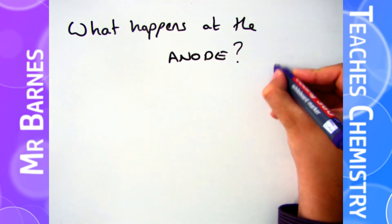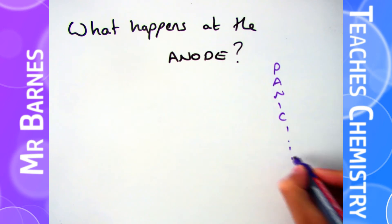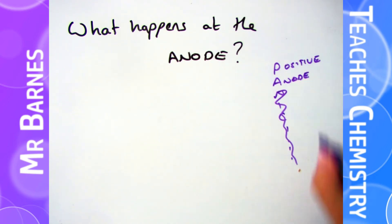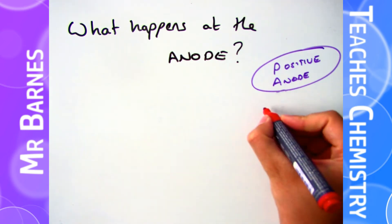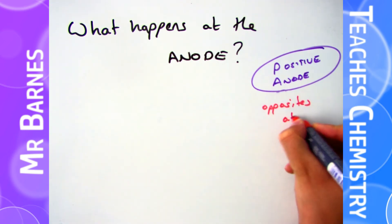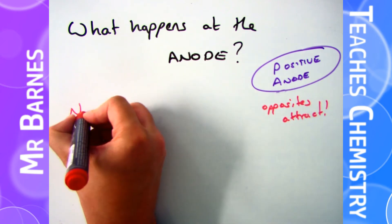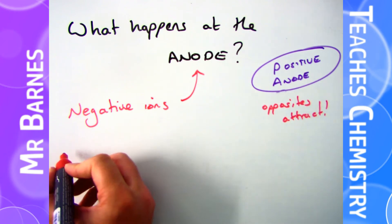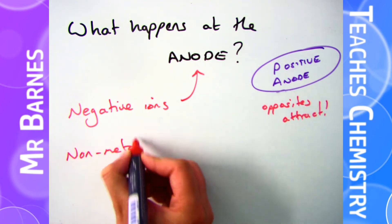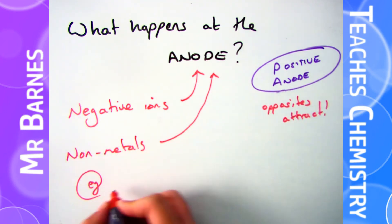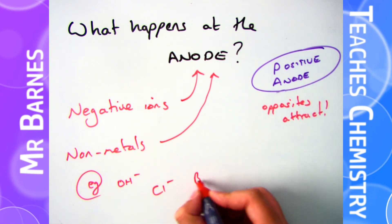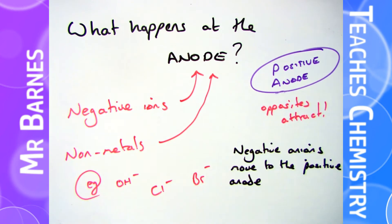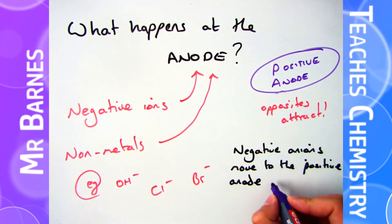If you get a question in the exam saying what happens to ions at the anode, the first thing you need to remember is: positive anode, negative is cathode. Opposites attract, so if you have a positive anode, the negative ions are going to move towards it. Those negative ions are always your non-metals — for example, hydroxide ions, chlorine ions, or bromine ions. So negative ions move to the positive anode.